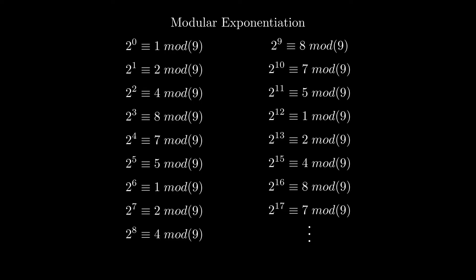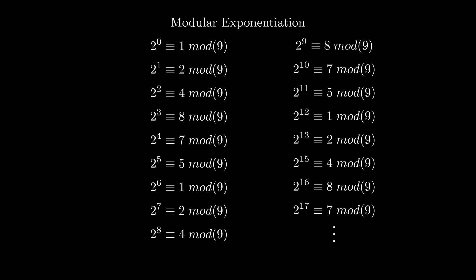We can reduce the factoring problem down into the problem of finding the period of modular exponentiation. Modular exponentiation is when you take the powers of a number modulo a number. Here is an example. As you can see, if we have a number, in this case 2, and put it to increasing powers,